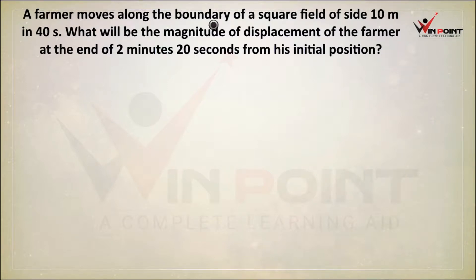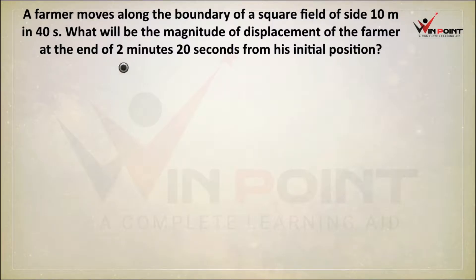A farmer moves along the boundary of a square field of side 10 meters in 40 seconds. What will be the magnitude of displacement of the farmer at the end of 2 minutes 20 seconds from his initial position?